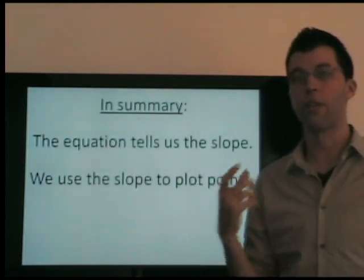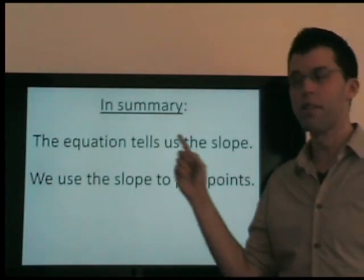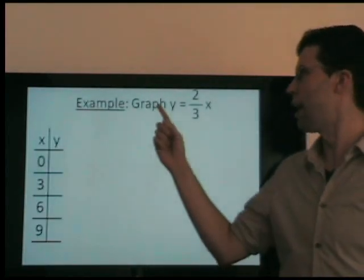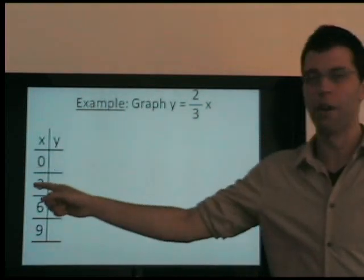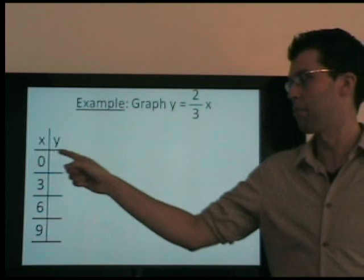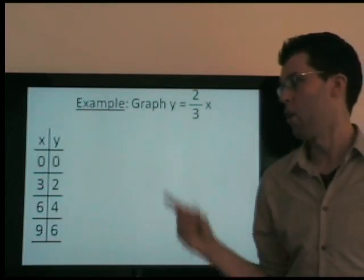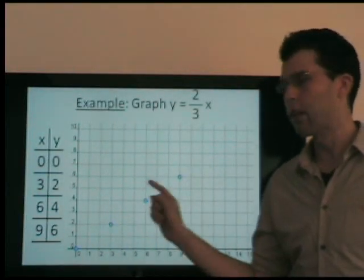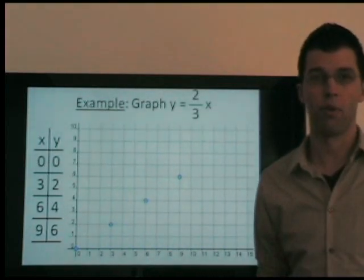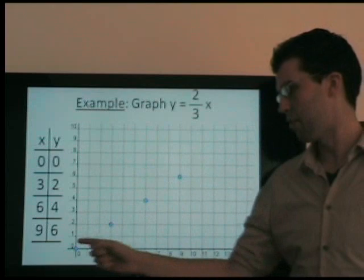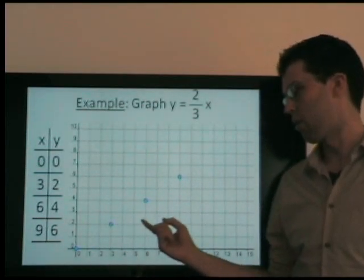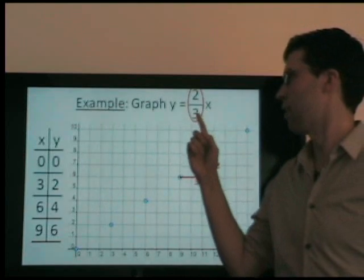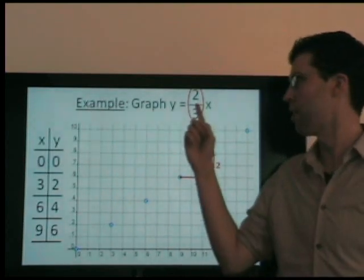The equation tells us the slope. Once we know the slope, we quickly plot points. For y equals 2 thirds times x, again, we pick simple values for x and multiply by 2 thirds — 0 times 2 thirds, 3 times 2 thirds. We have our points and we plot them. Is there a pattern that allows us to quickly plot points without making a table? From point to point we go right 3 and up 2 — and that comes right from the equation, which tells us the slope.